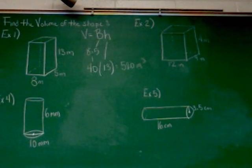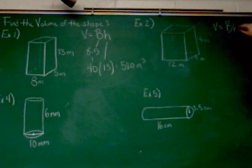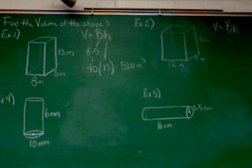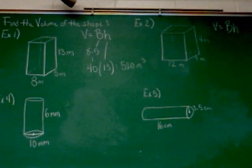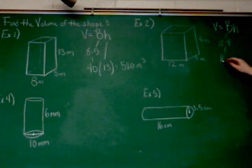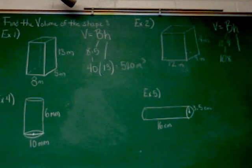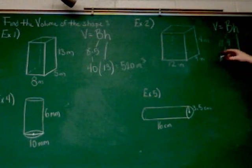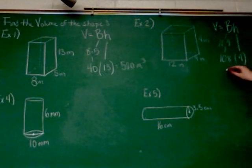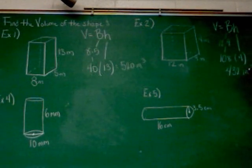Example two is yet another prism, very similar. We'll start with the area of the base — in this case the bottom piece, which is 12 by 9. 12 times 9 is 108. The height is the height of the entire prism, which is the 4-inch number. So we're doing 108 times 4, which is 432 inches cubed.